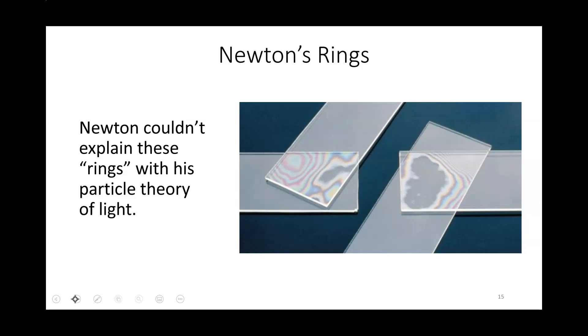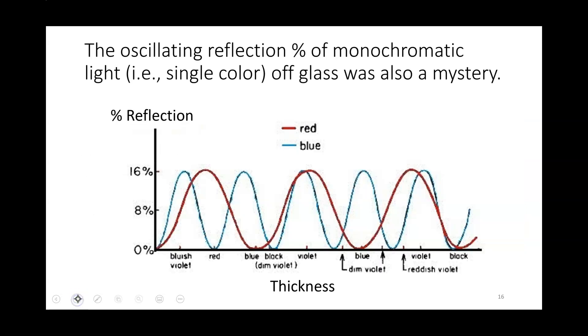Moreover, if you shine light of a fixed color—imagine a laser beam or something—at a slab of glass, the amount that's reflected depends on the thickness of the glass, and it oscillates somewhere between zero and sixteen percent. It depends on the color, which we know is wavelength. This was something that was odd as well, and it has some resemblance of an oscillation, which makes us kind of believe this might have to do with waves.